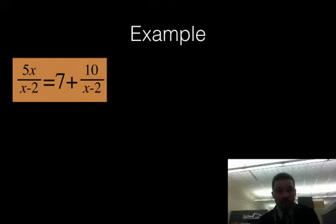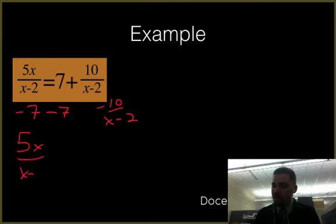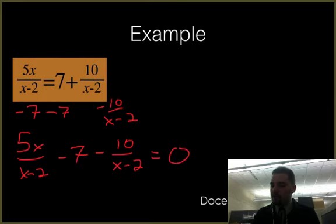Did you pause? Okay, good. Now let's go see what you got. Or let's go see what I got. The first thing that we should have done is subtracted 7 from both sides and subtracted 10 over (x minus 2). So I get 5x over (x minus 2) minus 7 minus 10 over (x minus 2) equals 0.